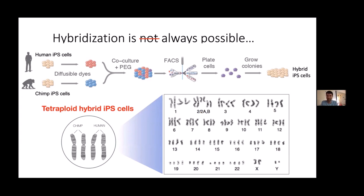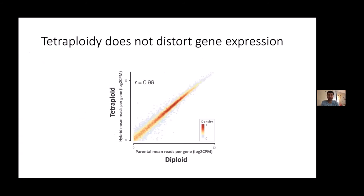This was very exciting because now we can apply hybrid methods to study human evolution. We were a bit concerned whether these tetraploid cells would behave well. The first thing we did was compare their gene expression to the diploid parents. Remarkably, if you take the average of the two diploid parents — human and chimp — and compare it to expression in the tetraploid lines, you see an almost perfect correlation. The lines are also karyotypically quite stable, about as stable as a regular iPS cell, suggesting we can use these as a model to study human-chimp hybridization in vitro.